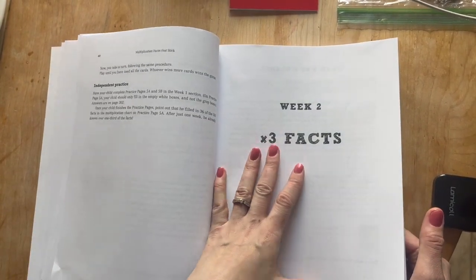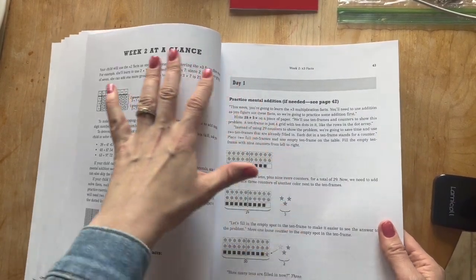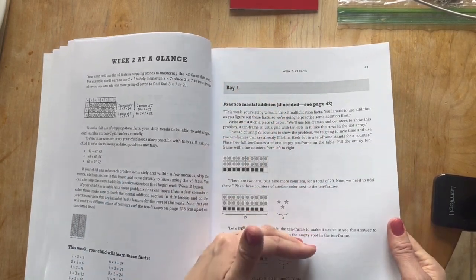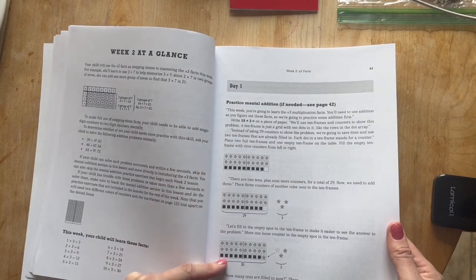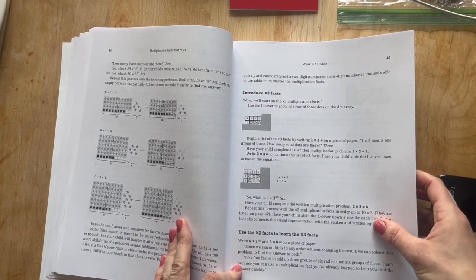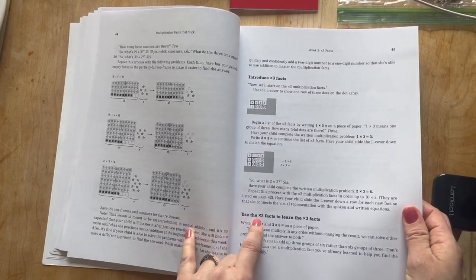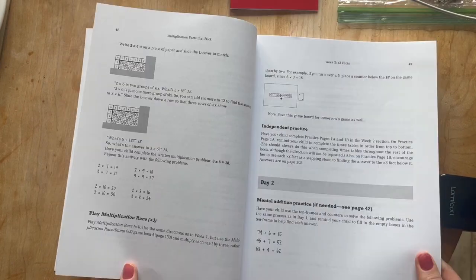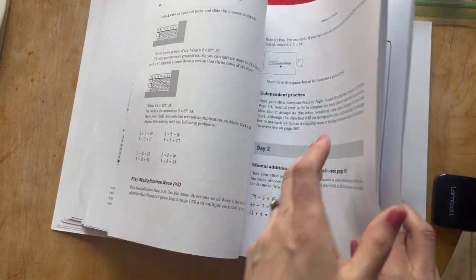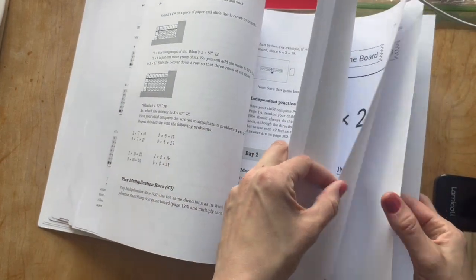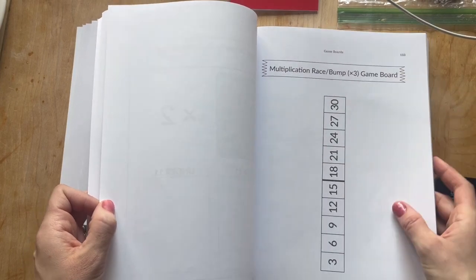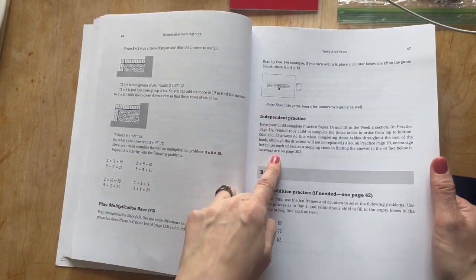Now on week two, you're on to the times three facts. And it gives you the week at a glance, what you'll be doing, and then day one, same thing, scripted, just read from the top. Here you're going to be using the ten frames that are provided in the back. Introducing the times three facts and using the times two facts to learn the times three facts. Then you're going to have multiplication race for times three. So same exact board games again, except for for the times three. And you can see the numbers are different on here now. And then they'll have their worksheet again.